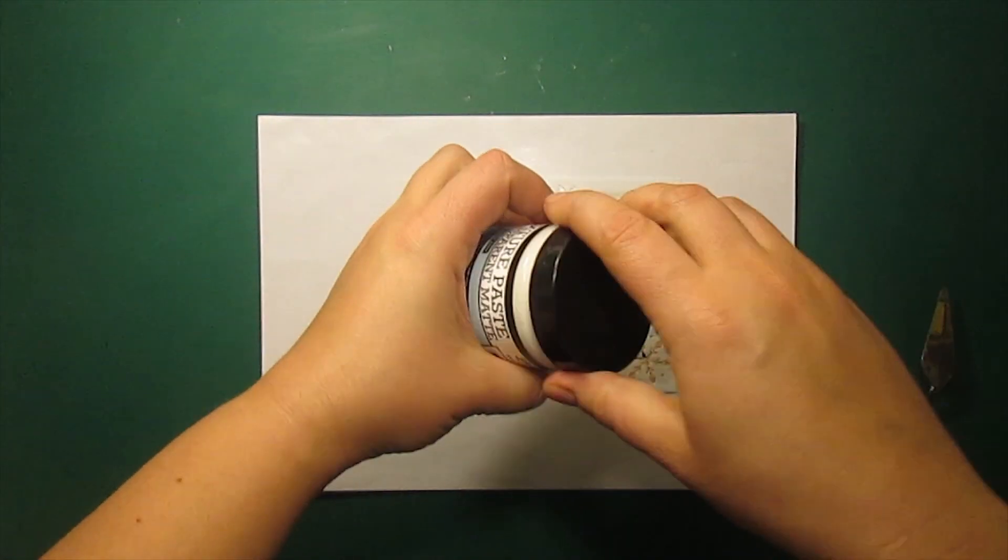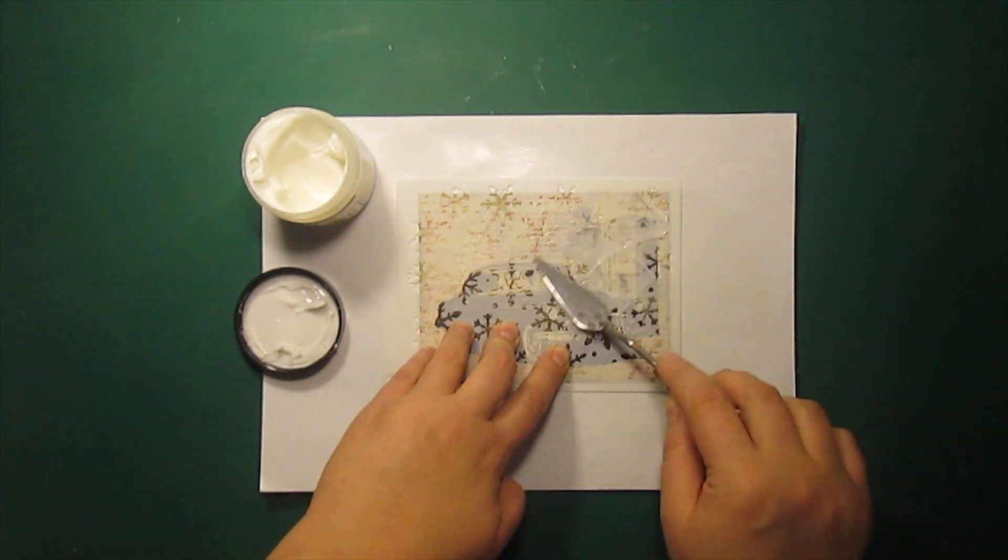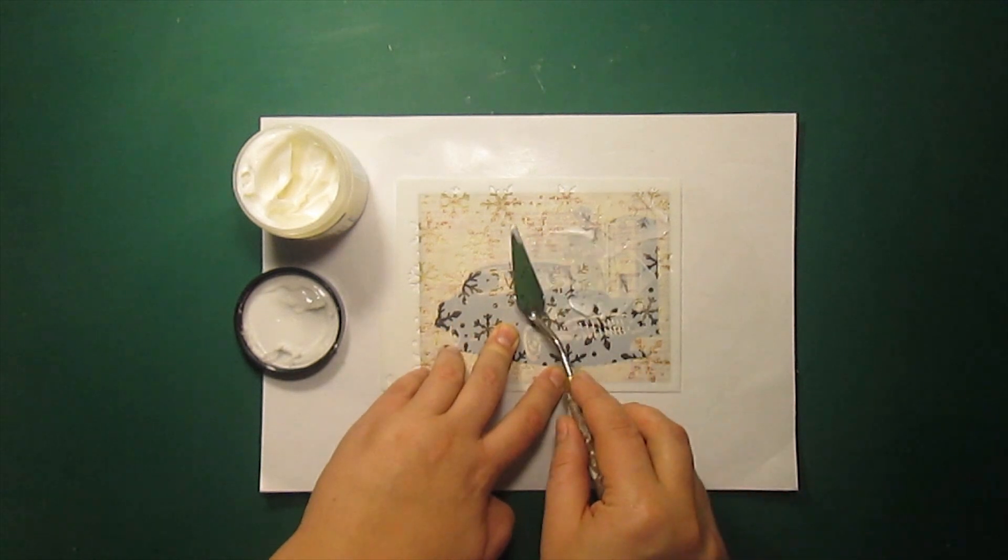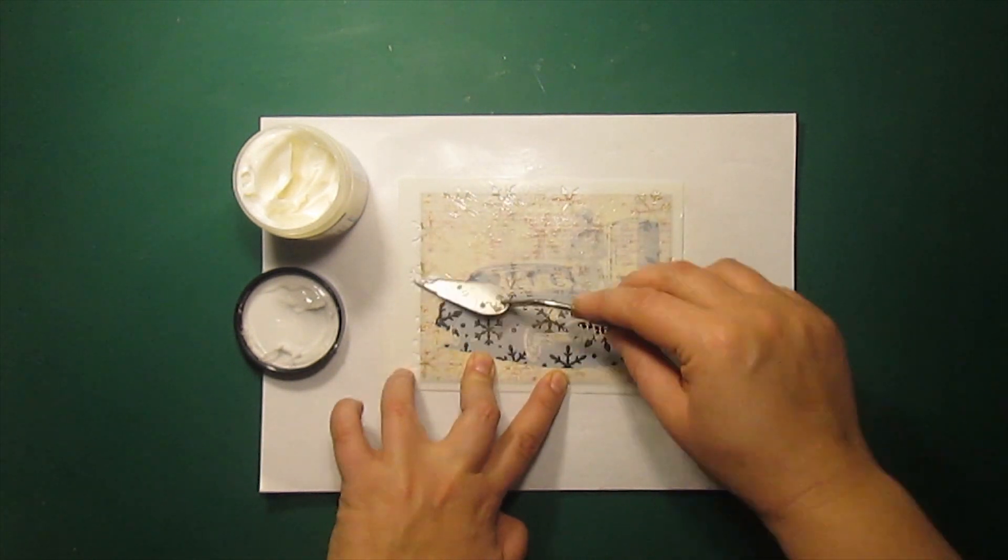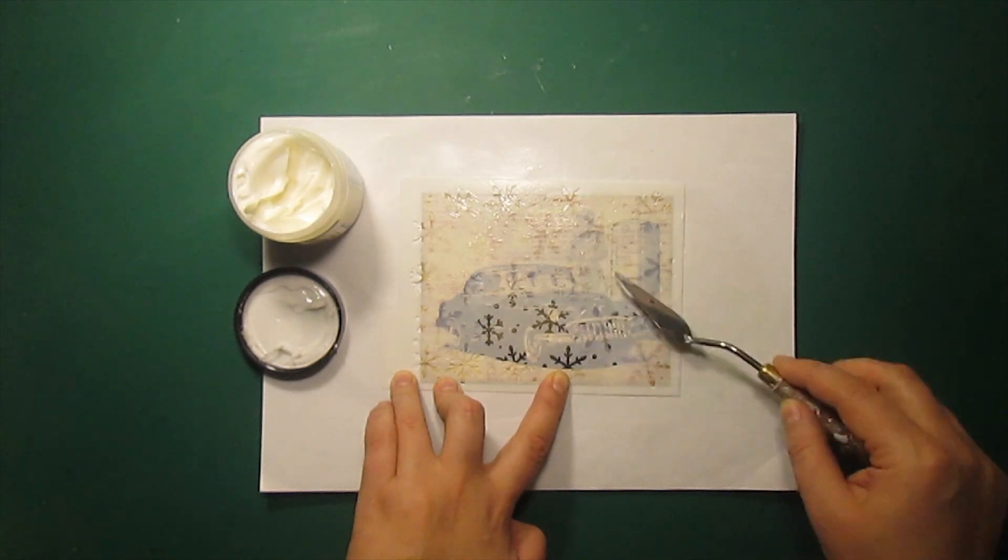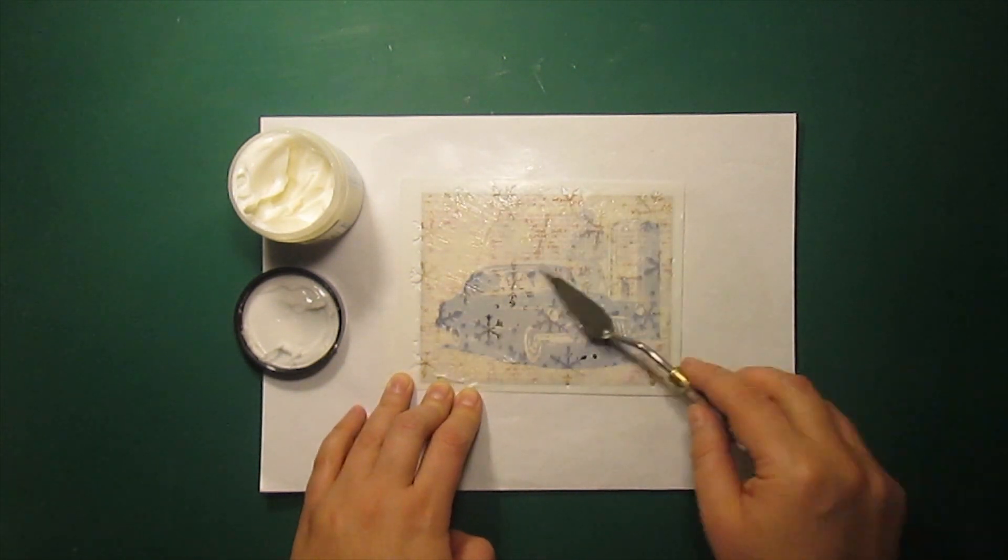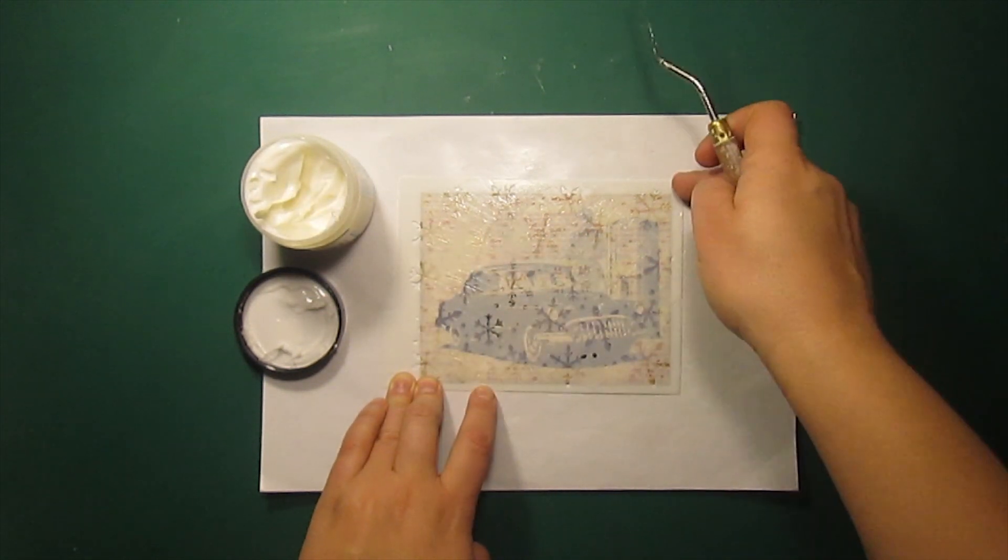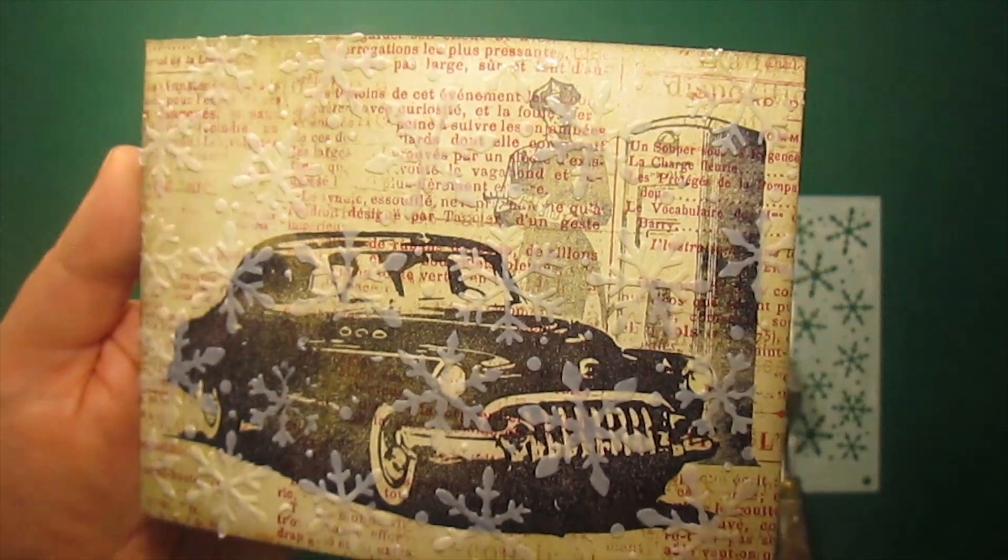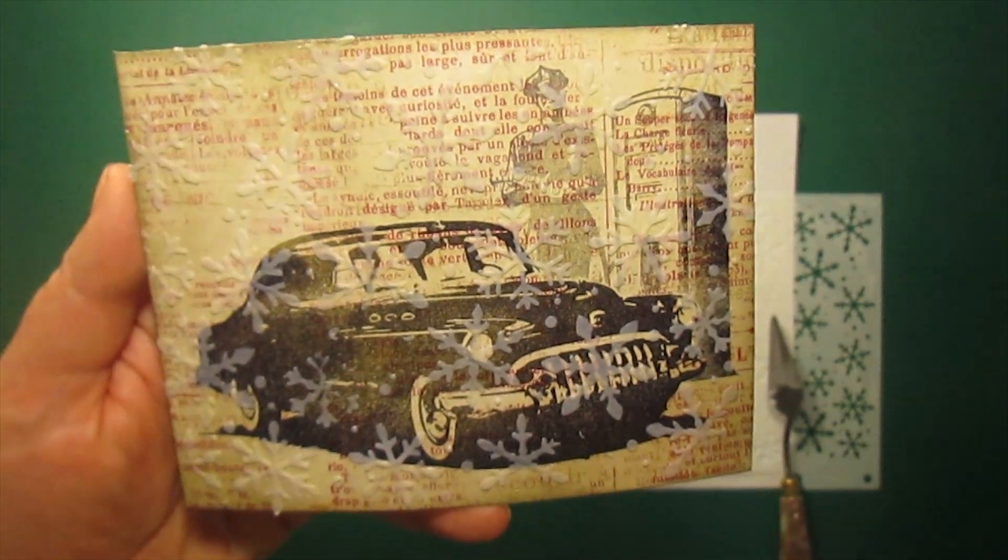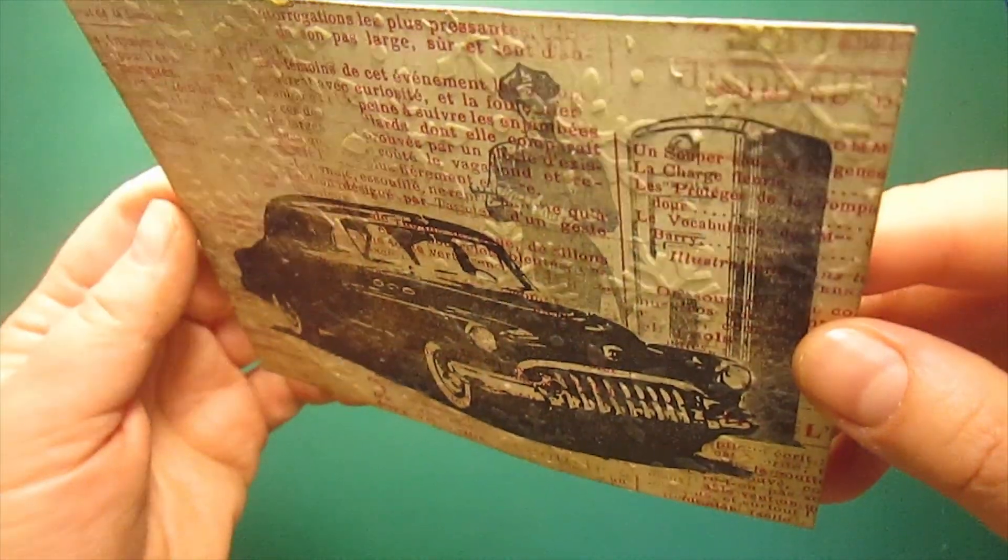To add some texture to the card I'm going to use the snowflake stencil and some transparent matte texture paste. I'm applying it all over the image with a spatula just like any other embossing paste. When the paste has just been applied it looks like that. And here is what it looks like when it's dry. Completely clear.